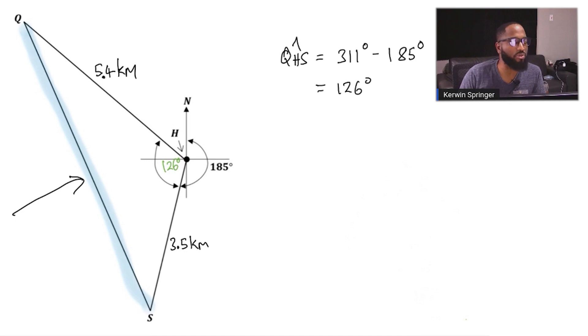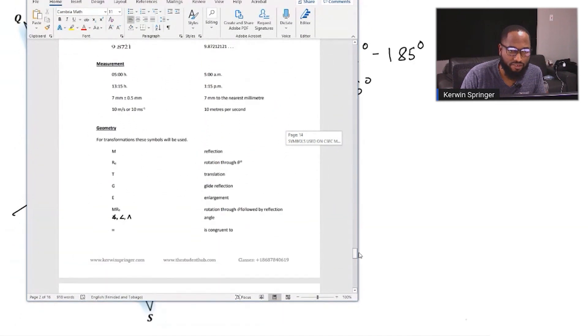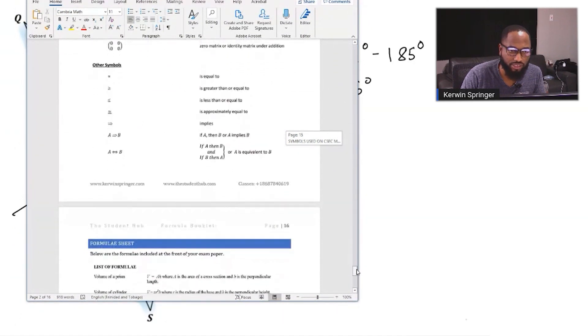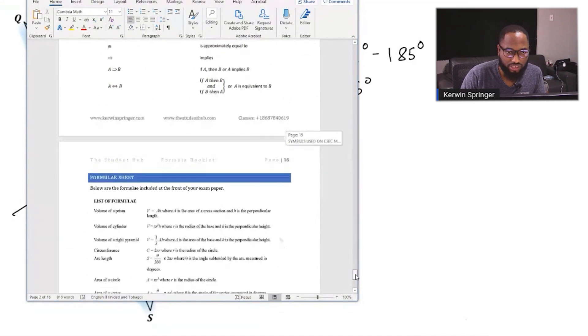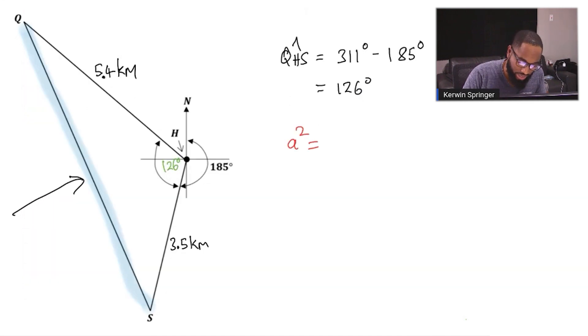Let me bring up the formula booklet. This is a booklet I created for my students that has all the formulas used in CSEC maths. The cosine rule is written at the front of your exam paper. You'll see it like this: a² = b² + c² - 2bc cos A. Let's do some labeling. The angle is here, this is A, and these two could be B and C.